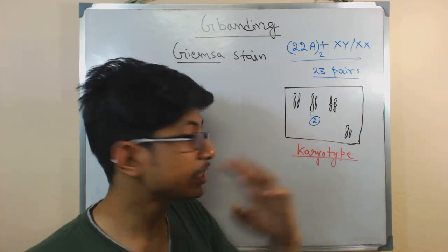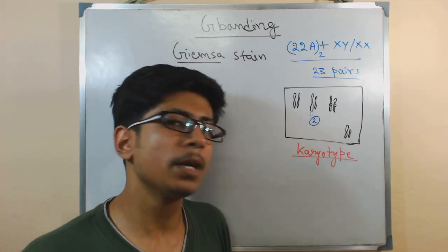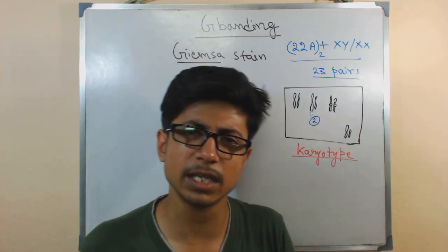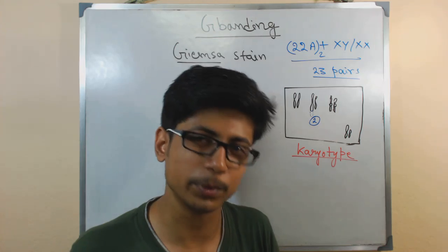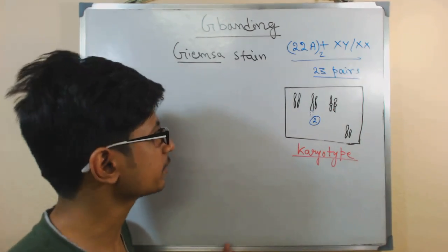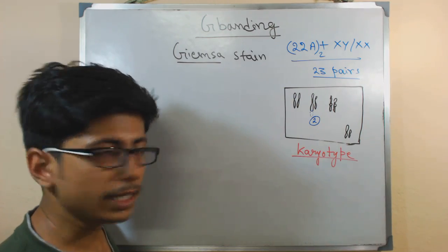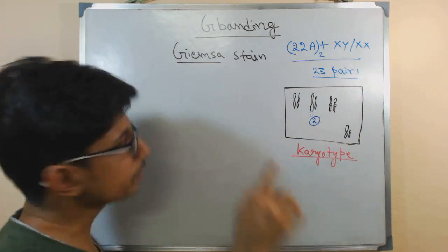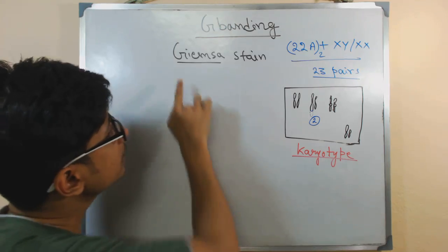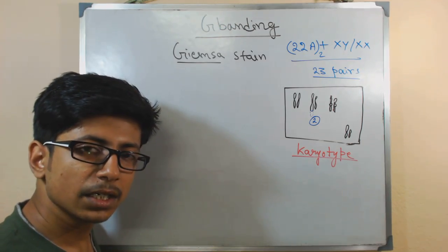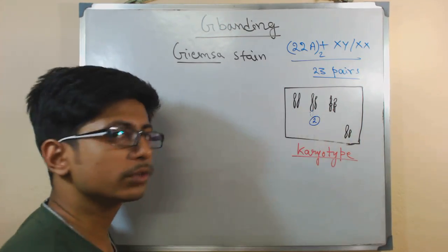But other types of changes—base pair mutations—cannot be found with this, only the structural differences. Now for that reason we need to stain those chromosomes. Now for staining those chromosomes we have this stain, Giemsa stain.